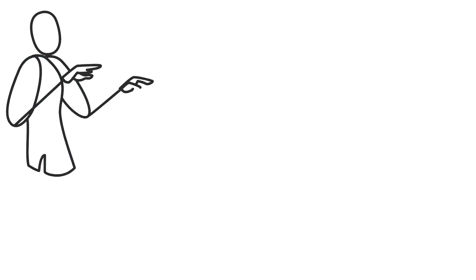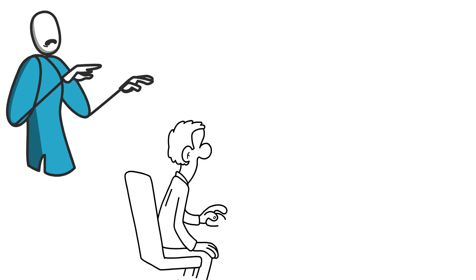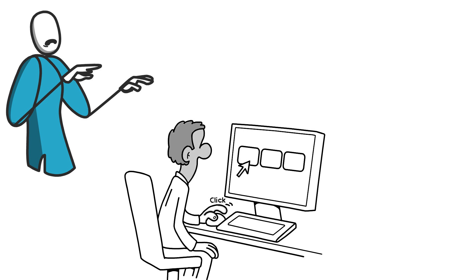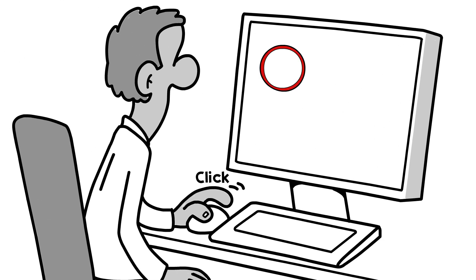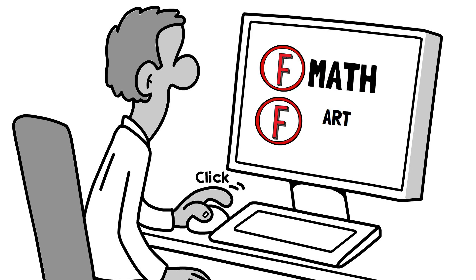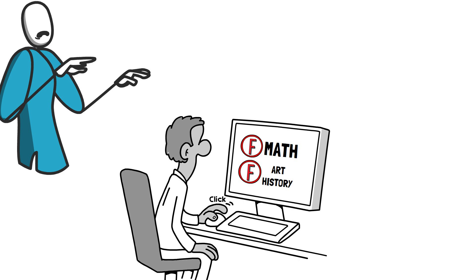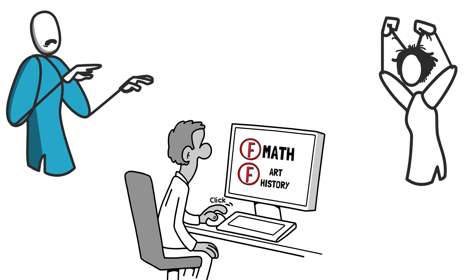Imagine it's result day and you're feeling pretty anxious. You finally muster the courage to check your grades, and lo and behold, it's not good news. You've got an F in not just one, but two classes. So maybe math and art history aren't your strong suits, but does that mean you're not smart?